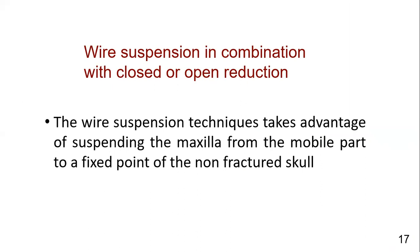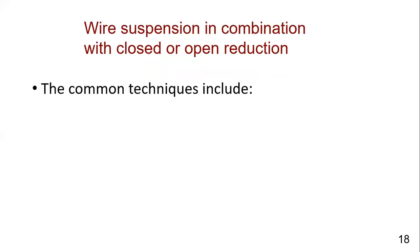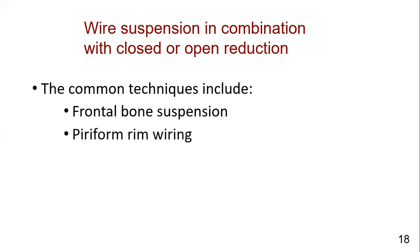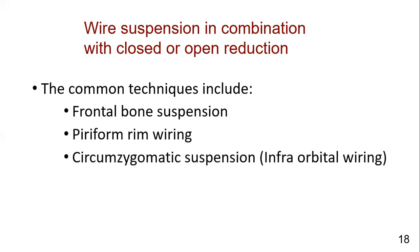Once reduction is done properly and the fracture segment is in normal position, fixation can be achieved by open reduction with plating, or by close reduction methods such as wire suspension or trans-osseous wiring. Wire suspension techniques work by suspending the maxilla from a mobile fractured part to a fixed non-fractured point, such as the skull. Common techniques include frontal bone suspension, piriform aperture rim wiring, circumzygomatic suspension, and infra-orbital wiring.